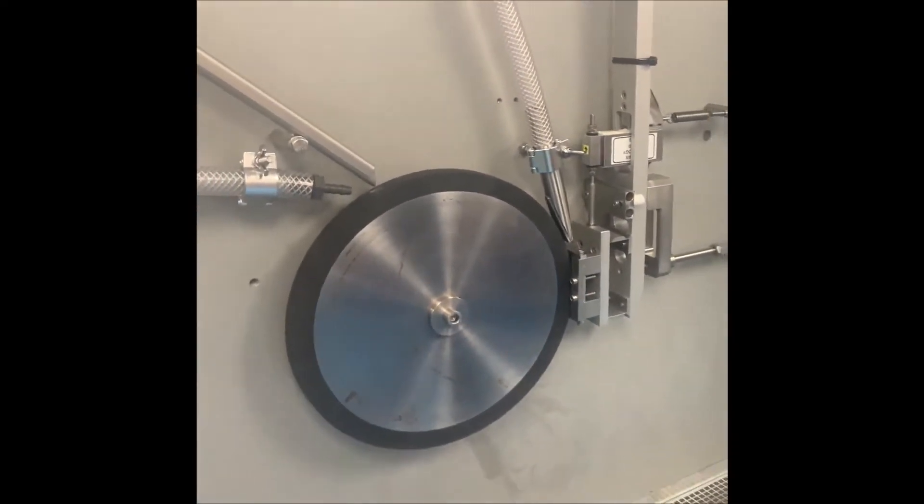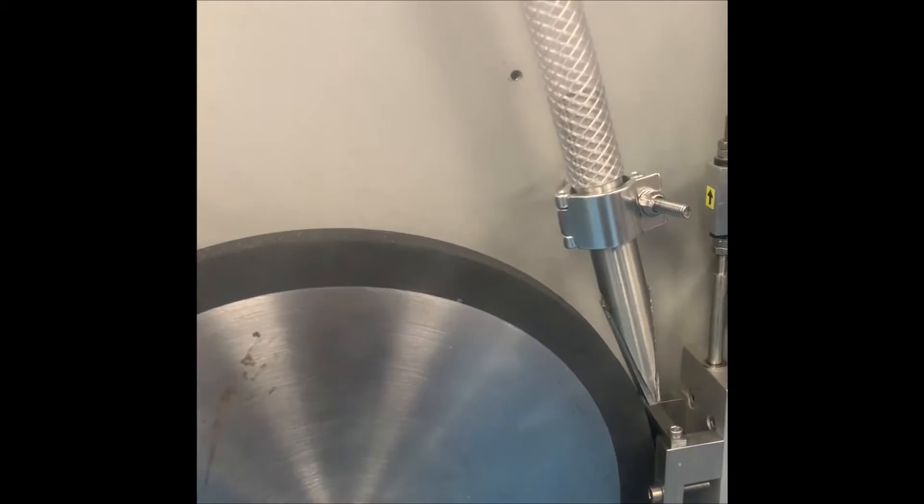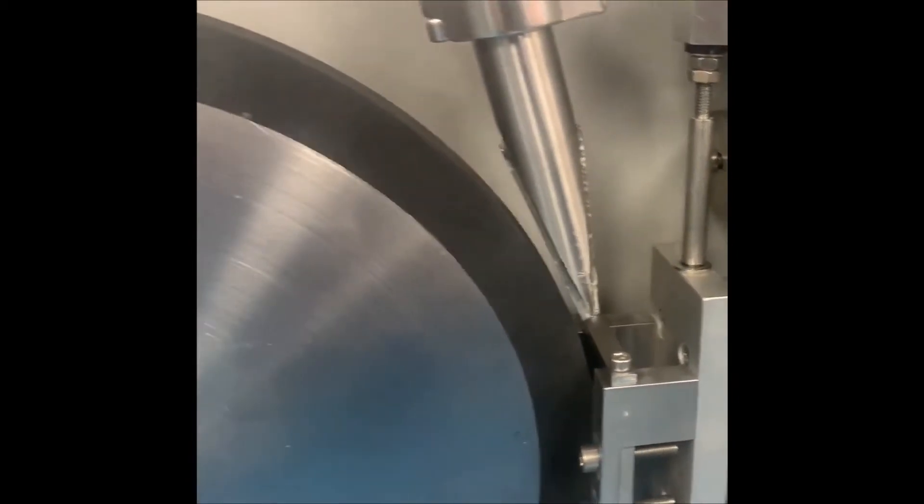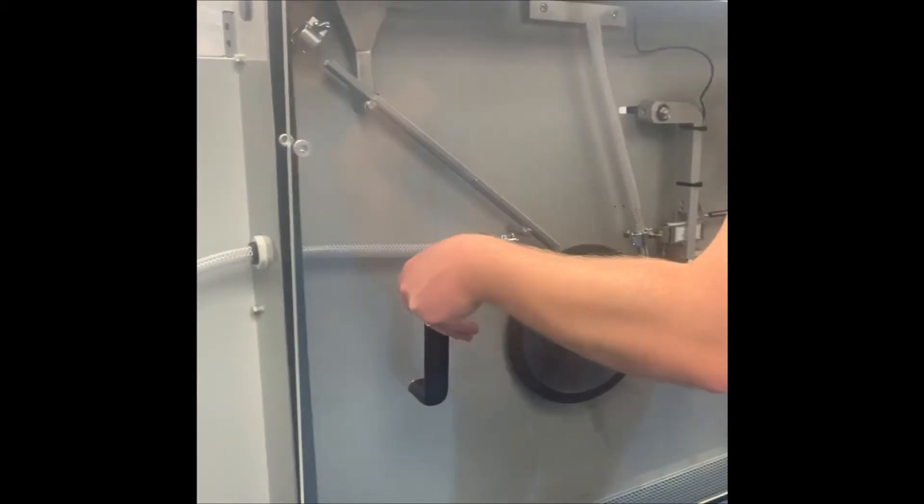For a dry sand and rubber wheel experiment, adjust the position of the abradant feed nozzle close to the surface of the wheel and above the inlet to the contact. Fit the guard and secure with the knobs provided.